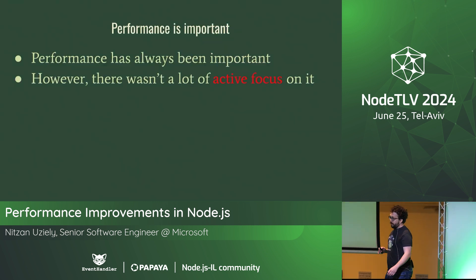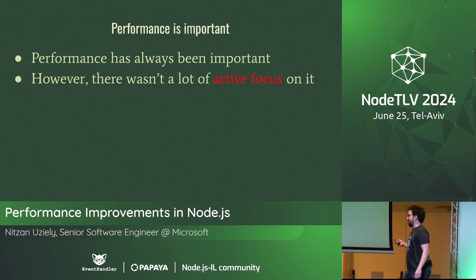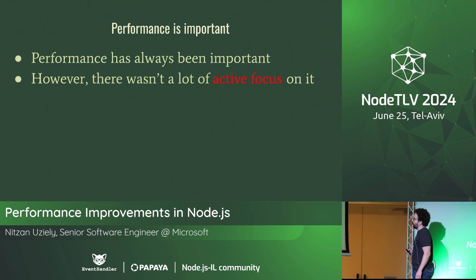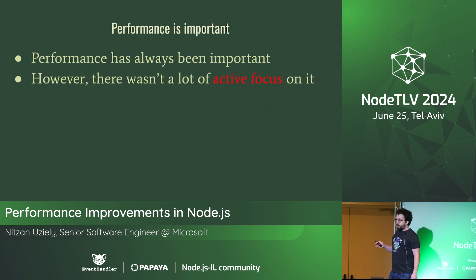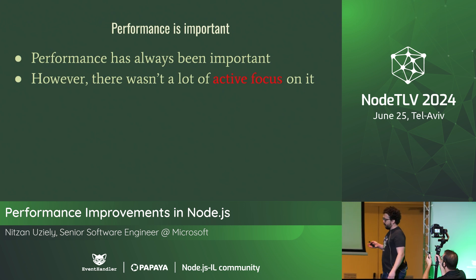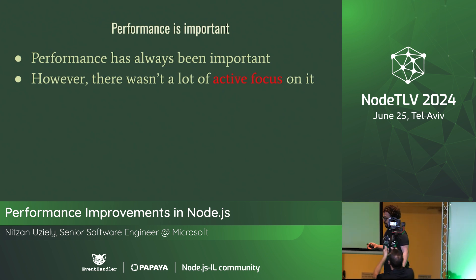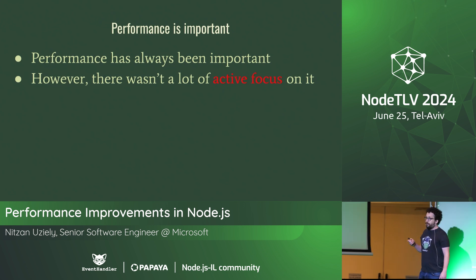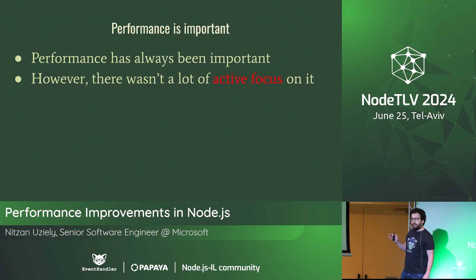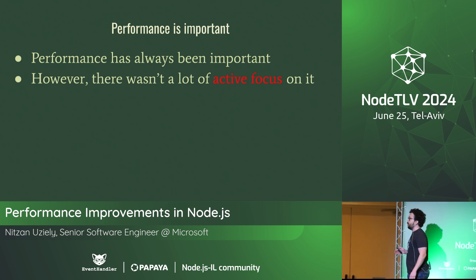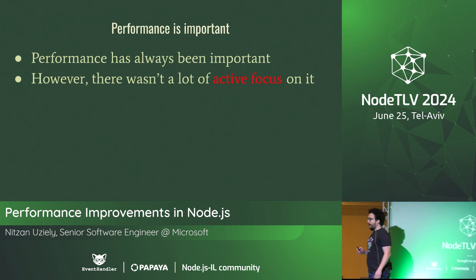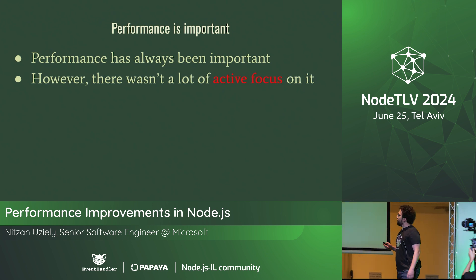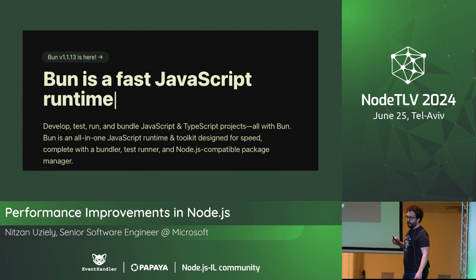Performance has been important in Node.js for a long time, but I wouldn't say it was a core priority for the team. Features and other things were more important — making more features, making more stuff. But there was a change in the last year or two, and I think we all know what it was: Bun.